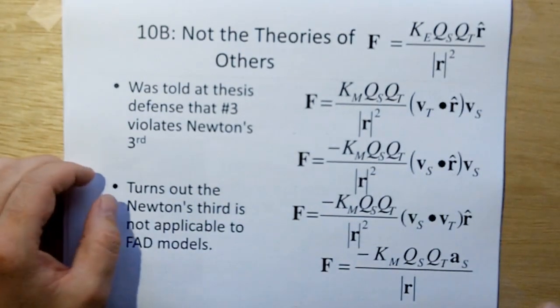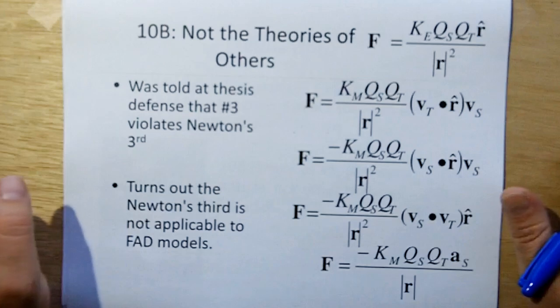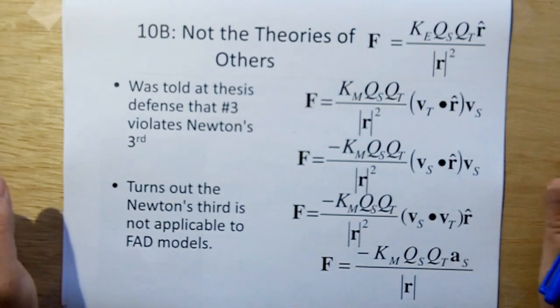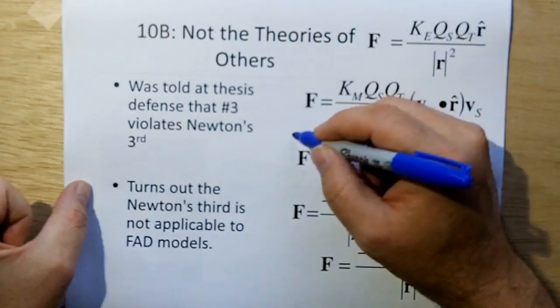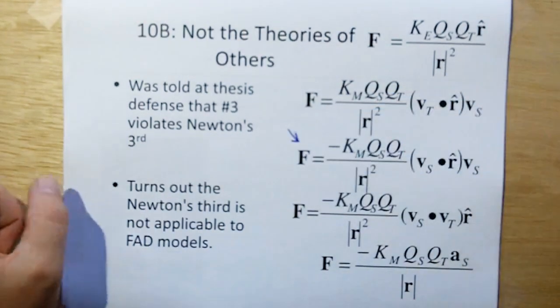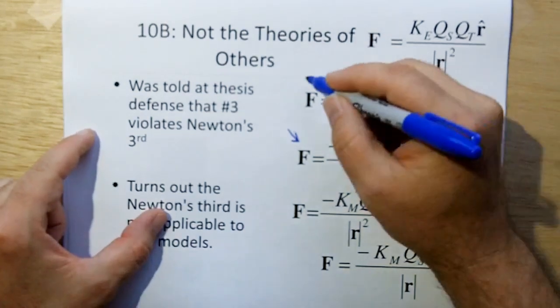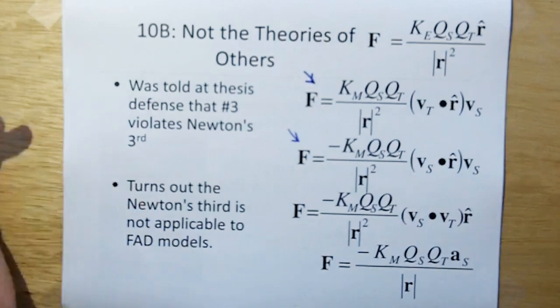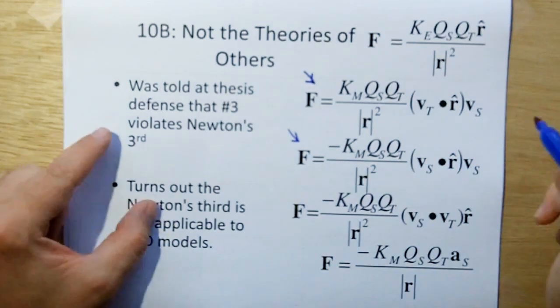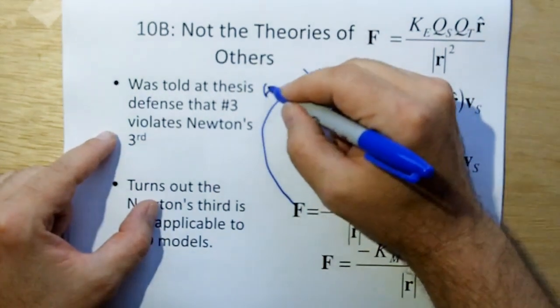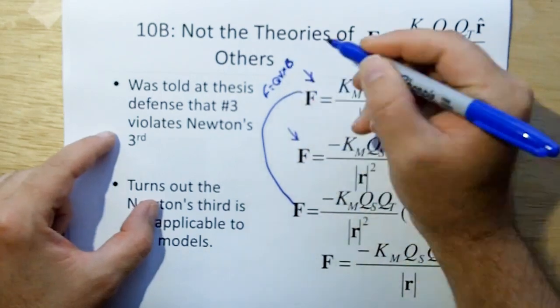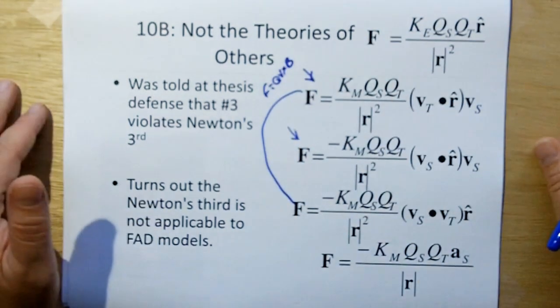And 10b. Do not assume that your theories must match the theories of others. When I was in my graduate thesis, someone told me that this model violates Newton's third law. Therefore, it can't possibly be correct. And I said to that someone, well, that means this one violates Newton's third law too. And he goes, well, yeah, that's true. And I said, but these are derived from F equals QV cross B. See, what you're saying is that all the electromagnetic theory we've been teaching now for 100 years is completely wrong.